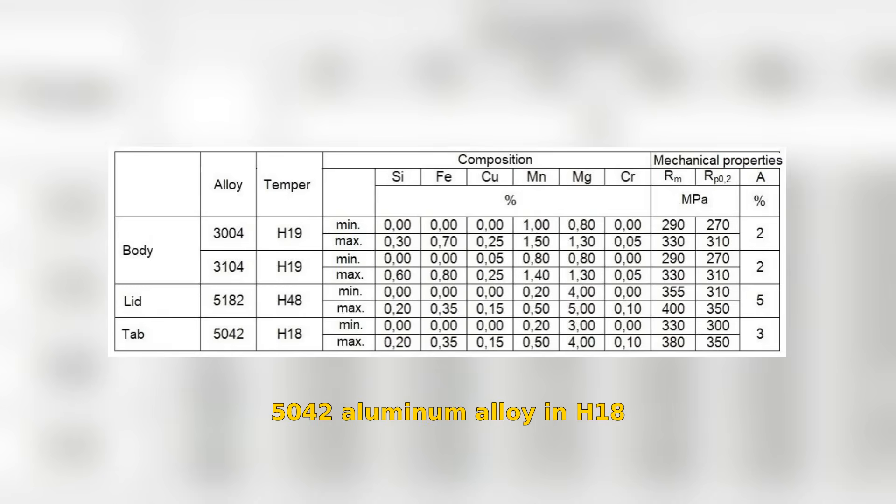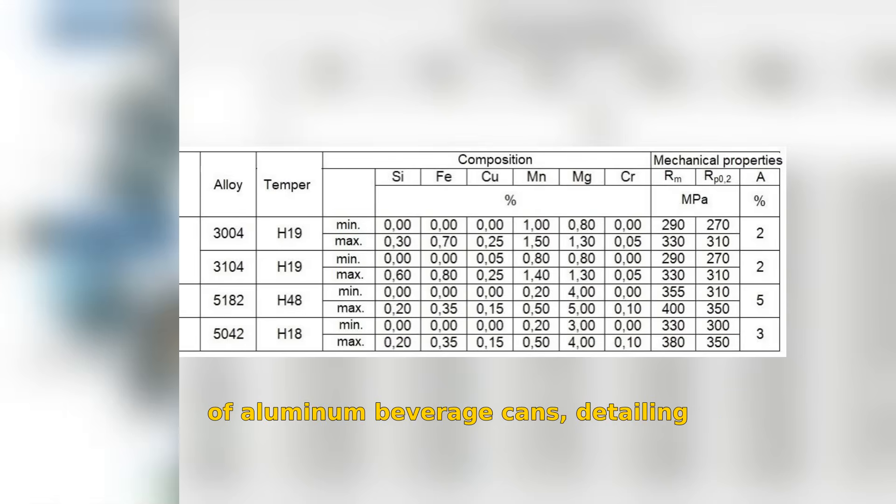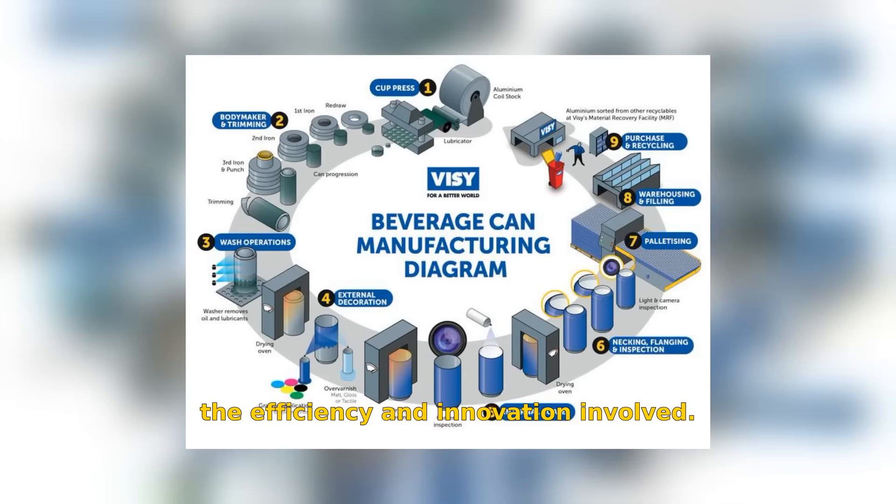A flow diagram showcases the manufacturing process of aluminum beverage cans, detailing the efficiency and innovation involved.